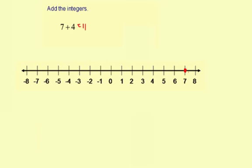So adding 4 means you go 4 to the right. Now notice this number line only goes to 8, so I'm going to add on a little bit more here. 9, 10, 11.